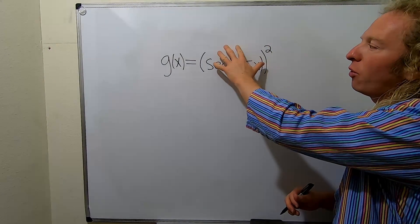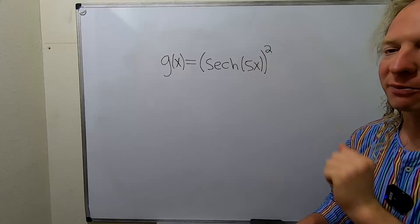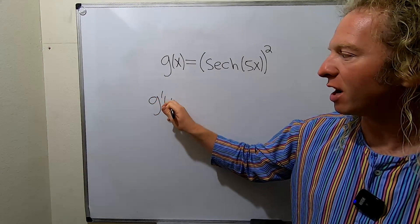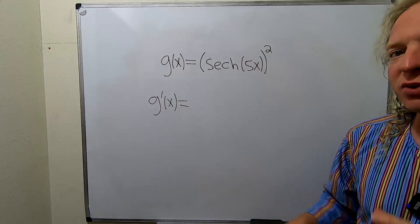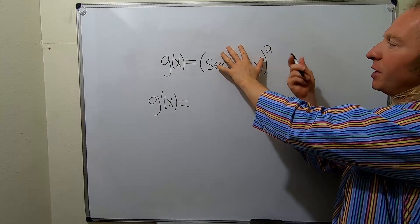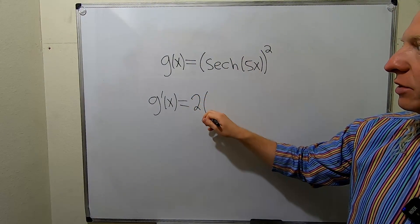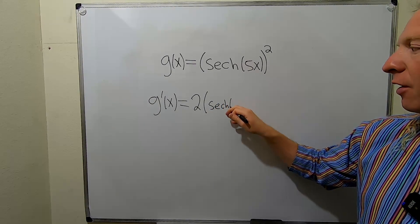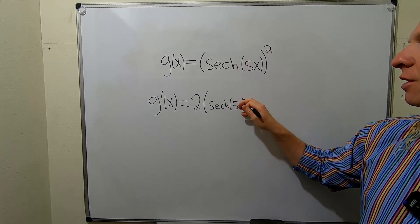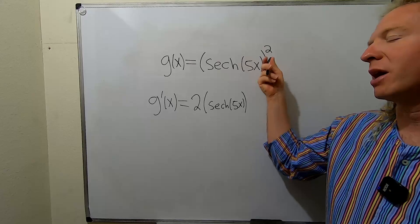We want to think of this whole thing as something to a power. So when we take the derivative, g prime of x, what you do is you leave the inside piece untouched and you just put the 2 in the front. So you get 2 parentheses hyperbolic secant of 5x parentheses, and then you subtract 1.